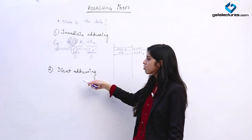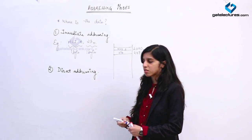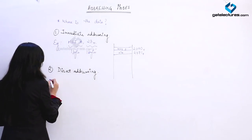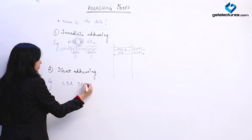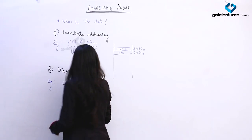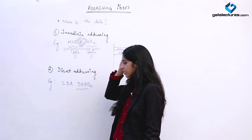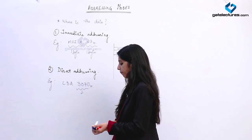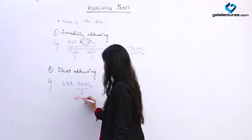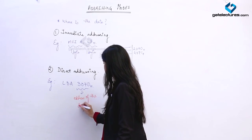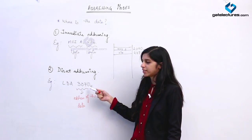What happens in direct addressing is you are giving the memory location of the data, the address of the data, directly in the instruction. For example, you are giving the instruction LDA 3070H. So we have given the memory address, the address of the data directly. In this addressing mode, we give the address of the data directly.